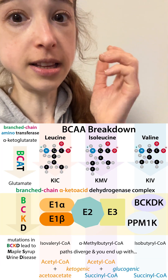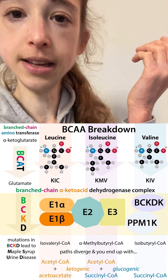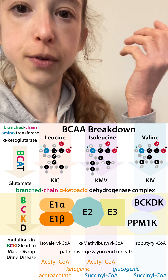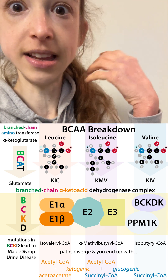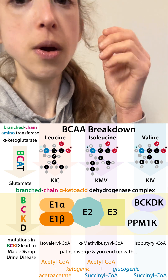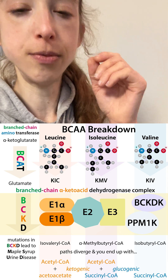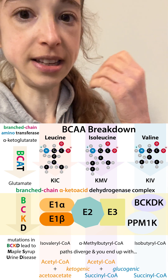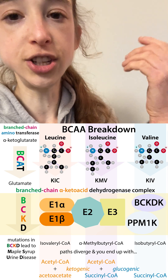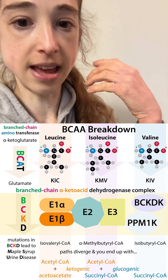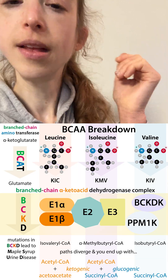Additionally, these branched chain amino acids can serve as signaling molecules for your body to indicate its fed status. They activate the mTOR pathway, which then leads to growth and insulin secretion — things that, if not controlled, can be bad.